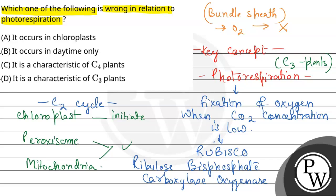Photorespiration in C4 plants is not seen. So according to the question, which one of the following is wrong in relation to photorespiration? The correct answer here will be option C, it is characteristic of C4 plants, which is incorrect with relation to photorespiration. It is a characteristic of C3 plants. It occurs in daytime and it occurs in chloroplast, these three options are correct. But this is incorrect, option C is incorrect. So I hope you understood it well, best of luck.